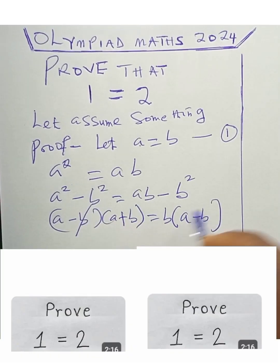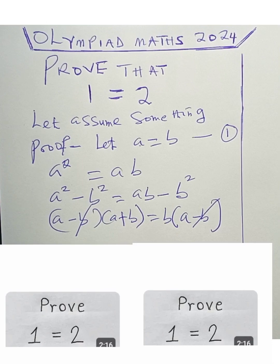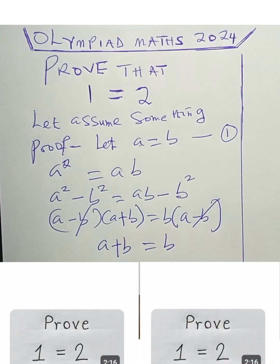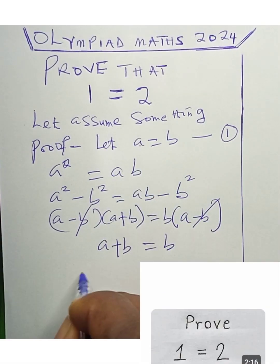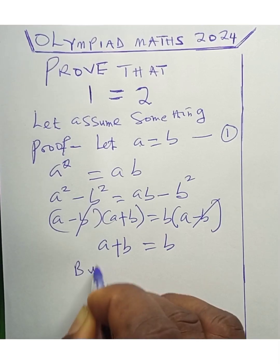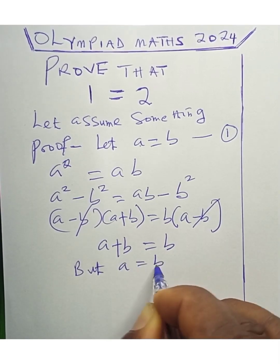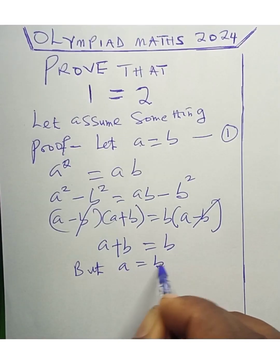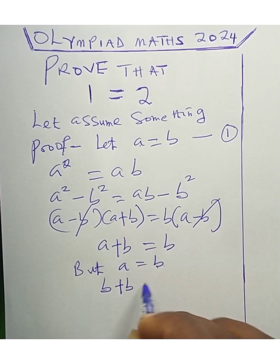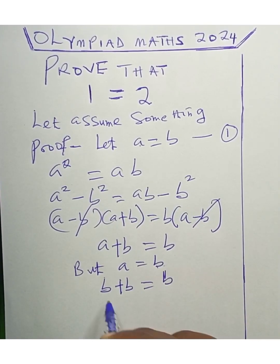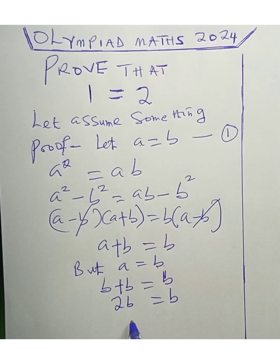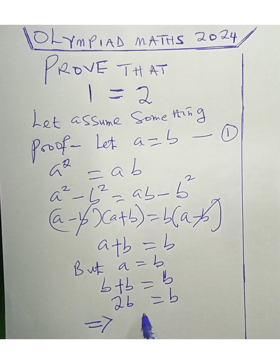We cancel (a minus b) from both sides, leaving a plus b equals b. Since we assumed a equals b, we substitute b for a: b plus b equals b, so 2b equals b.